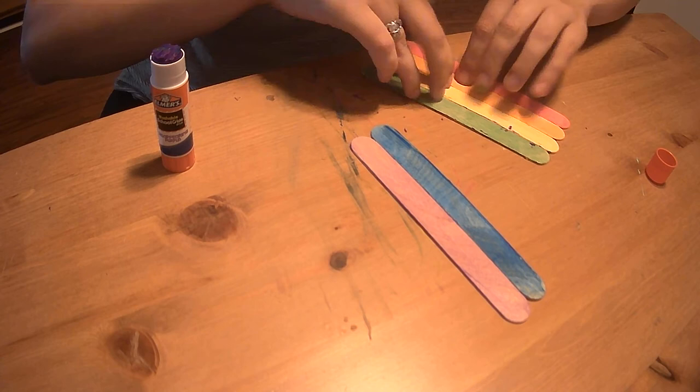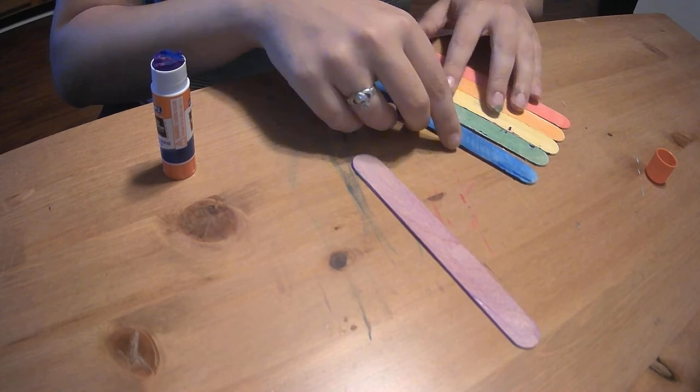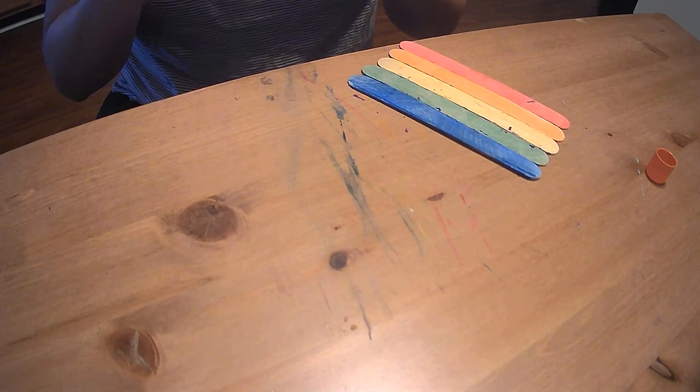Kind of let them dry. That orange, I'm telling you, it does not want to be a part of the rainbow. Okay, and then we'll do our pretty, pretty blue, our pretty cerulean. That was not necessarily all dried yet but that's okay, and we'll smush him on there.